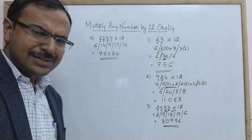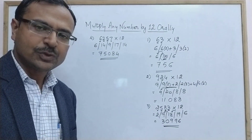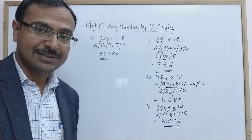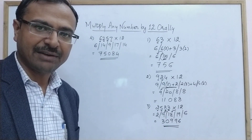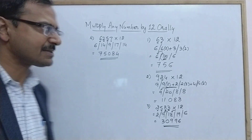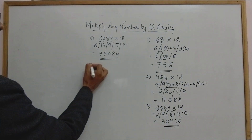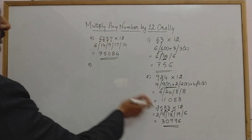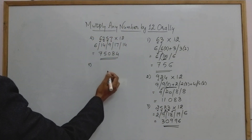Now that you're comfortable with the method, we can move on to heavier examples — multiplication of five-digit, six-digit, and seven-digit numbers. Let's take a five-digit number next.